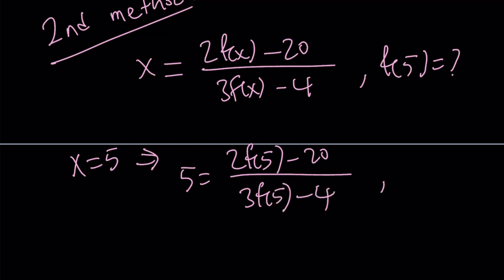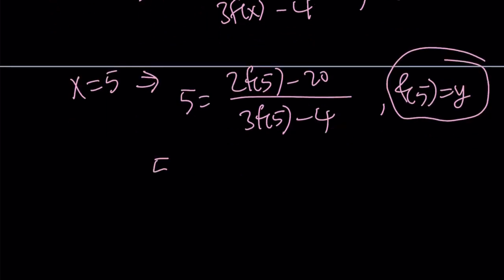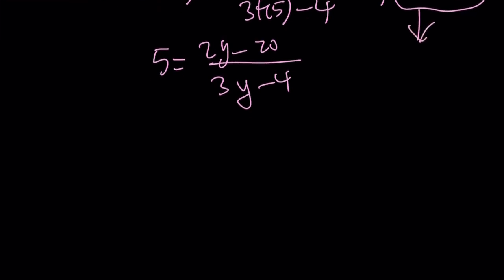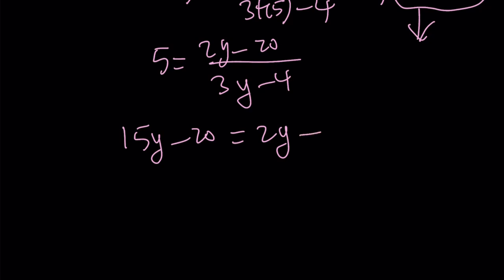So we get 5 equals 2 f of 5 minus 20 divided by 3 f of 5 minus 4. Now let's set f of 5 equal to y. We get 5 equals 2 y minus 20 divided by 3 y minus 4. Now what is my goal? My goal is to solve for y. This is a simple equation, right? So cross multiply: 15 y minus 20 equals 2 y minus 20.